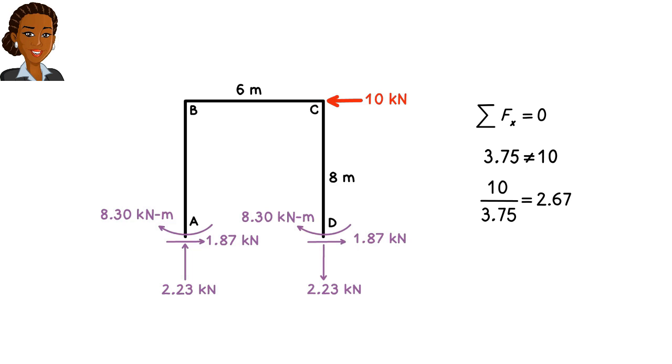Does this mean that we need to go back and regenerate the moment distribution table? No, not really. We can simply multiply the answers, the member end moments and support reactions, by 2.67 in order to arrive at the correct values. So the actual support reactions for the frame are shown here.